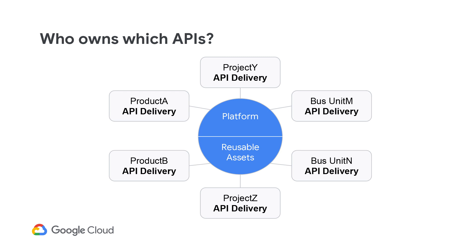This frees up the specific product, project, and business unit teams to focus on APIs supporting their business objectives. Delivery can be much faster when the teams don't have to worry about the standards for common assets. Reusable assets can be selected from an à la carte menu to include in the delivery team's API product.